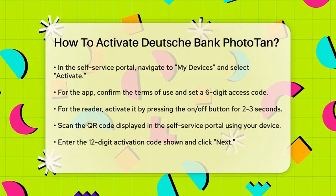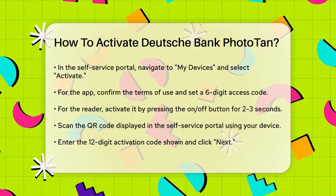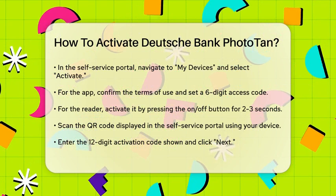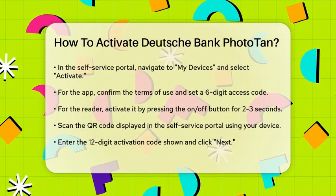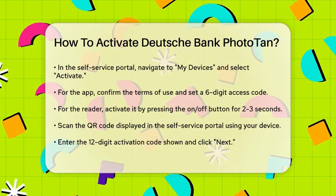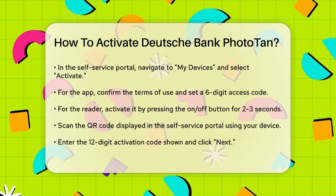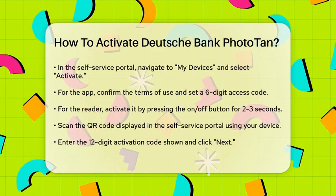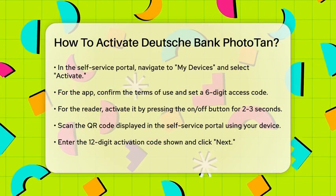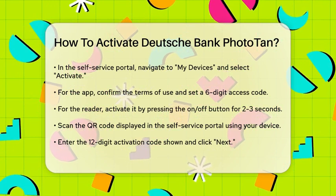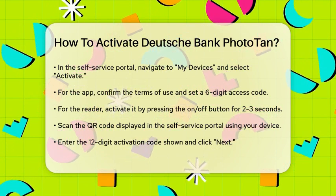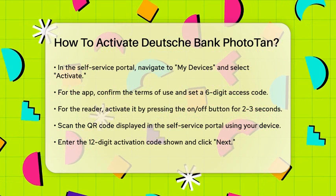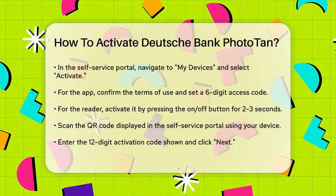Once you have the app or reader, go to the self-service portal and click on My Devices and then Activate. If you're using the app, start it, confirm the terms of use, and define your six-digit access code. For the reader, press the ON/OFF button for 3 to 4 seconds to activate it and then click Continue.